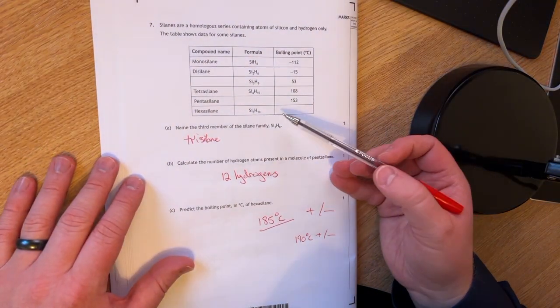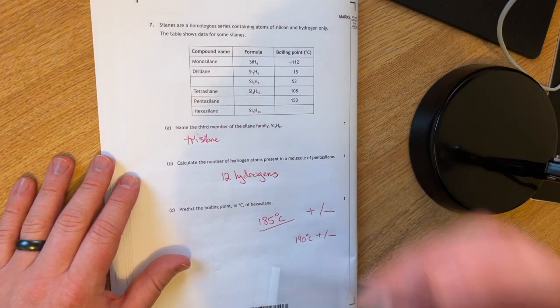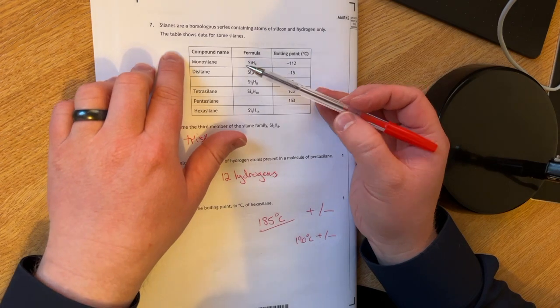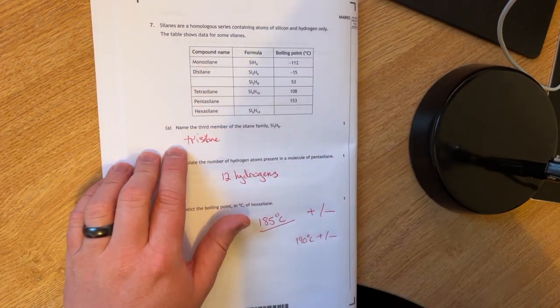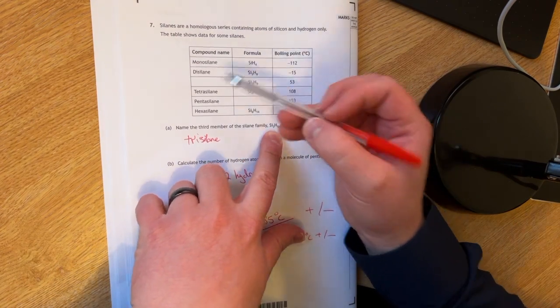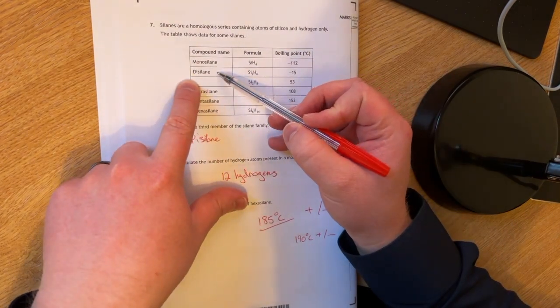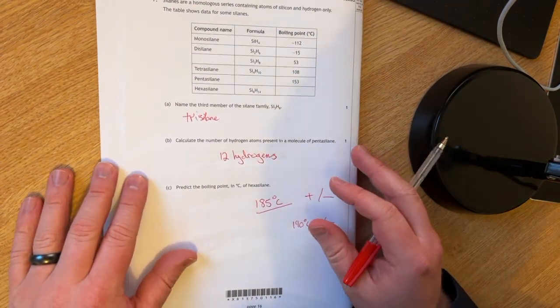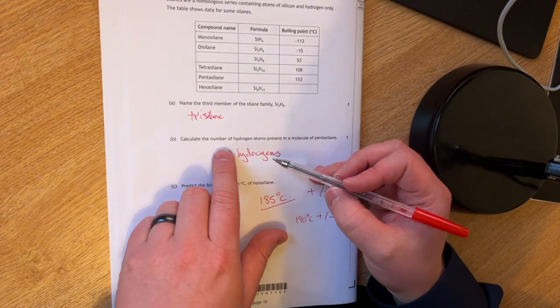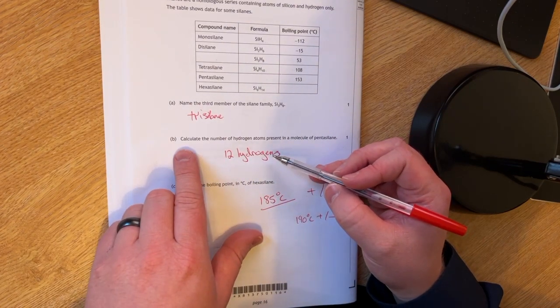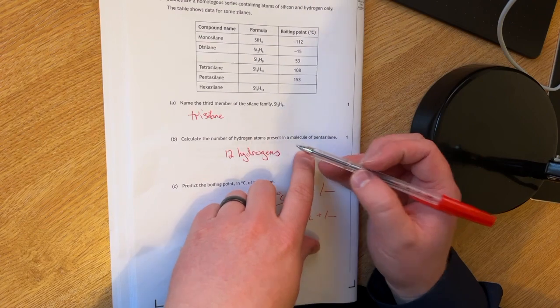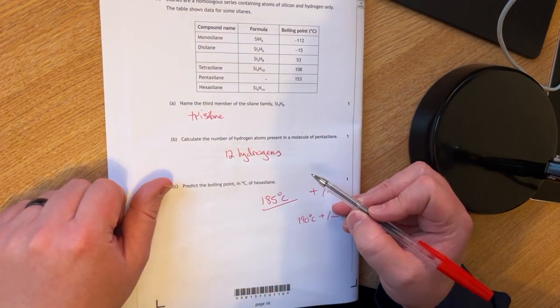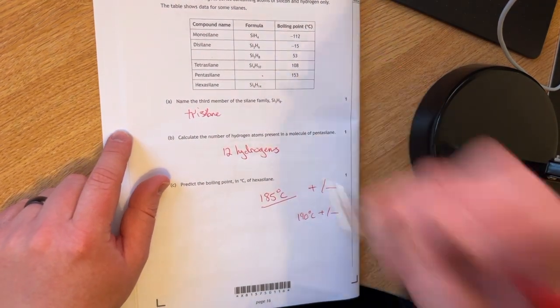Question seven. The silanes are a homologous series containing atoms of silicon and hydrogen only. The table shows data for some silanes. You have to name the third member of the silane family. So if the first one was mono, the second one is di, this one must be trisilane. You have to calculate the number of hydrogen atoms present in a molecule of pentasilane. It's going to be 12. If we're looking at the trends, it's got to be 12.